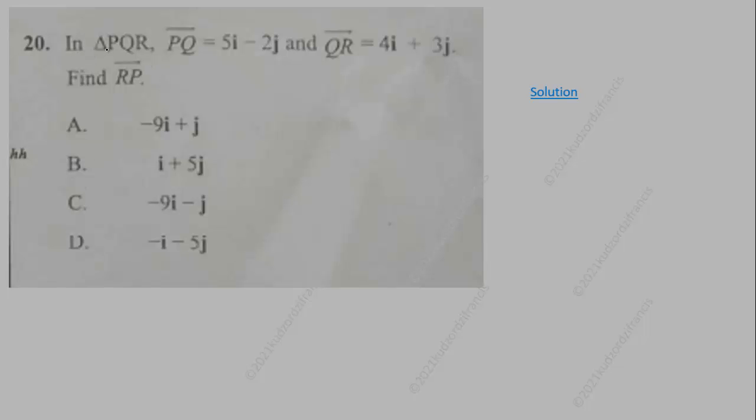Now let's look at question 20. In triangle PQR, PQ is 5i minus 2j, and QR is 4i plus 3j. Find RP. So we use the triangular law of vector addition: PQ plus QR should give you PR. We are looking for RP, not PR, so we negate both sides. When you negate both sides, we know the negative of PR is RP, so that will give us RP.